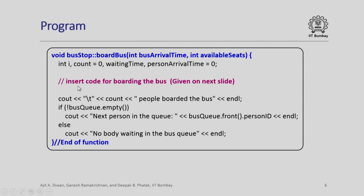Once the boarding code is executed, we output the count — the number of people who have boarded the bus. If the bus queue is not empty, we print out the next person in the queue who is still waiting, which is bus_queue.front() and their person ID. Otherwise we print that nobody is waiting in the bus queue. We still need to write the actual boarding code, which is explained next.